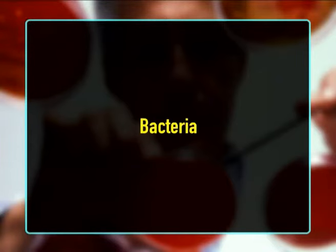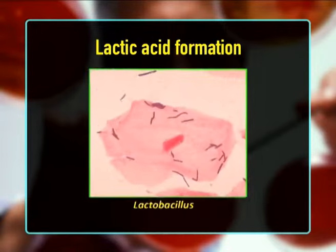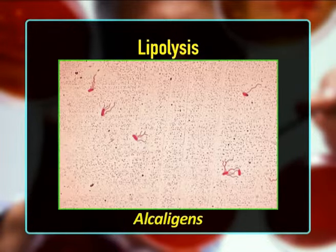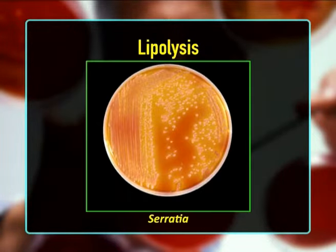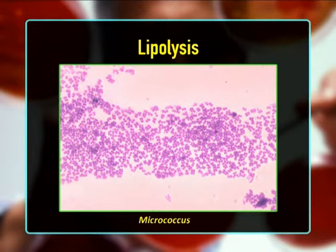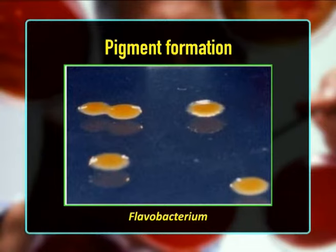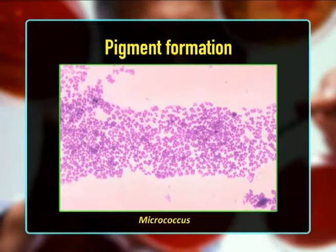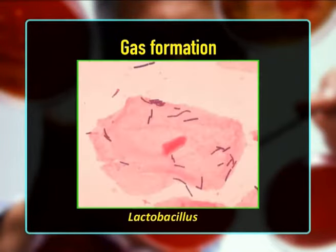Saprophytic microorganisms that result in food spoilage include bacteria, molds, and yeasts. Spoilage is the change of look, consistency, flavor, and odor of foods. Examples of bacteria involved in food spoilage include: lactic acid formation by Lactobacillus and Leuconostoc; lipolysis by Pseudomonas, Alcaligenes, Serratia, and Micrococcus; pigment formation by Flavobacterium, Serratia, and Micrococcus.